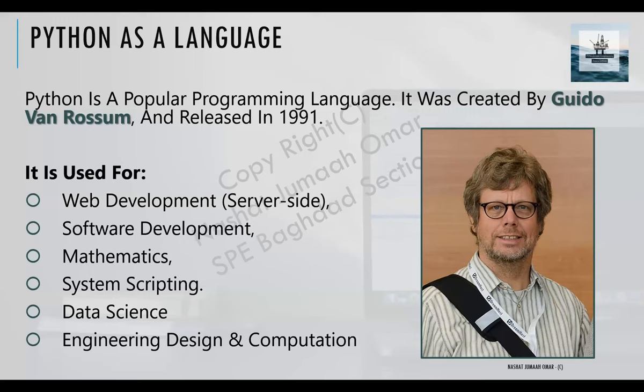Let me give you a glimpse of what Python can be used for nowadays. Python is being used for web development, for developing desktop software. A very popular example is a commercial software in the oil and gas industry called TechLog by Schlumberger — a petrophysical tool used to analyze logs and formation evaluation, built 100% on Python.